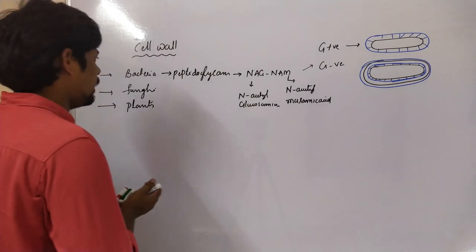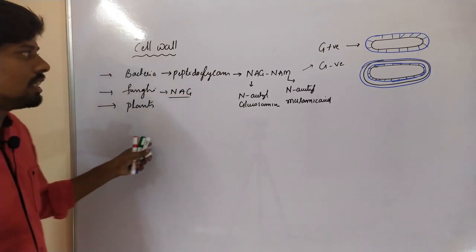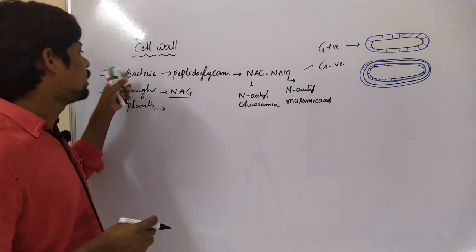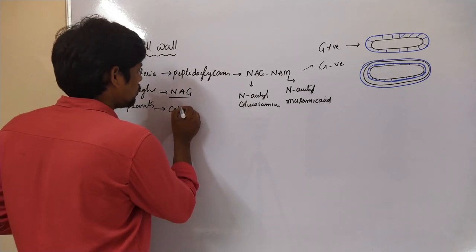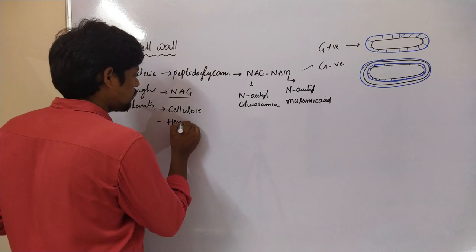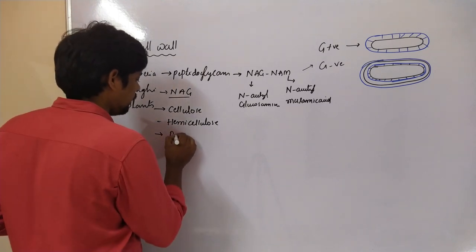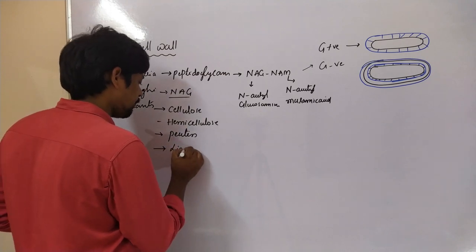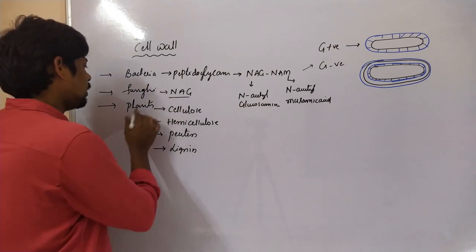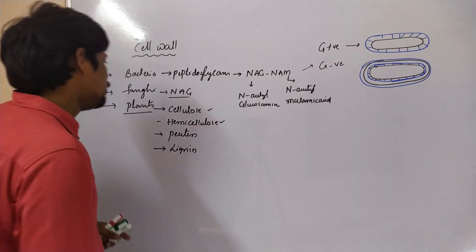Fungi also contain a cell wall, made up of NAG only — the polymer of NAG, which is N-acetylglucosamine. Coming to plants, it is a very complex structure compared to fungi and bacteria, because plants contain cellulose as the cell wall structural component, and also hemicellulose, pectin, and lignin. All these are components present in the cell wall of plants.